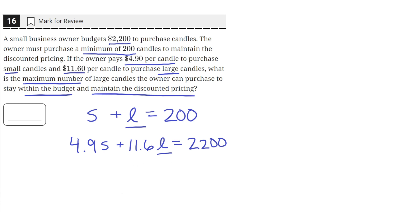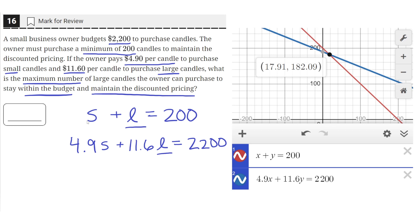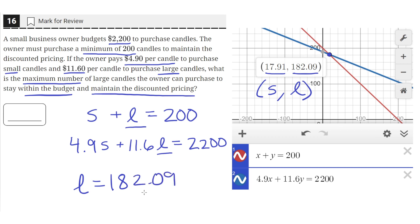It would be easier to just use the Desmos graphing calculator. Here I've graphed the two equations — X is the number of small candles and Y is the number of large candles. Desmos found the point of intersection, and it tells us it's at an X value of 17.91 and a Y value of 182.09. So using our coordinates, X is small candles and Y is large candles, meaning the maximum is 182.09 large candles. But we need the large candles to be a whole number, so we round this down to 182 candles.